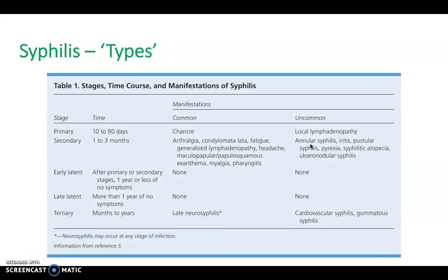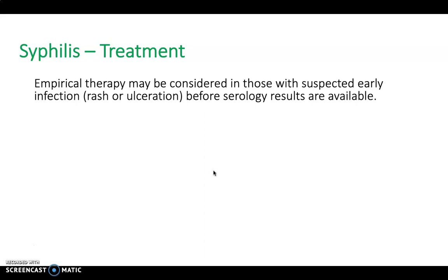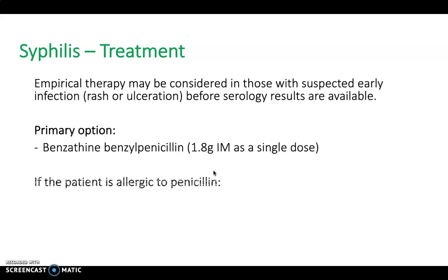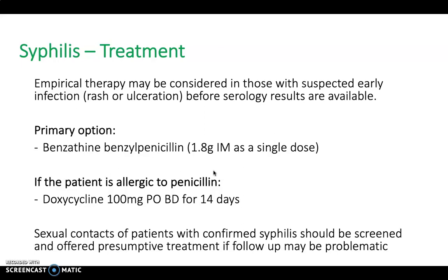It's important to know the difference between primary and secondary syphilis. Primary syphilis presents within 10 to 90 days with the characteristic anogenital ulcer and local lymphadenopathy. Secondary syphilis manifests over one to three months with symptoms including arthralgia, fatigue, headaches, and rashes. Treatment: empirical therapy may be considered in those with suspected early infection before serology is available. First-line is benzathine benzylpenicillin 1.8g IM as a single dose; doxycycline is an alternative for penicillin-allergic patients. Sexual contacts should be screened and offered presumptive treatment if follow-up may be problematic.